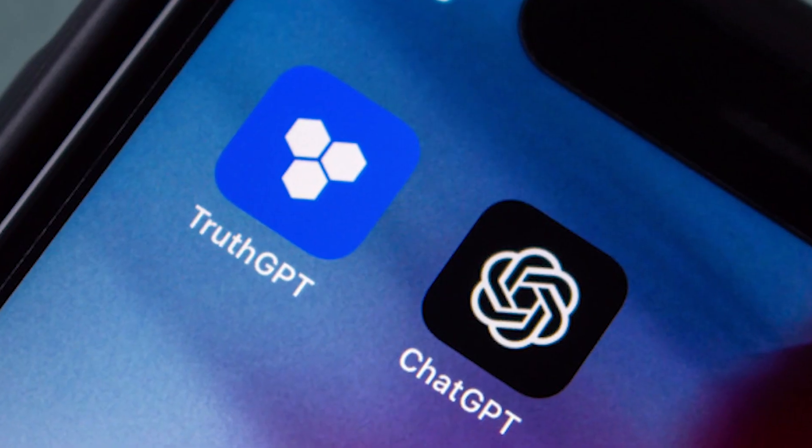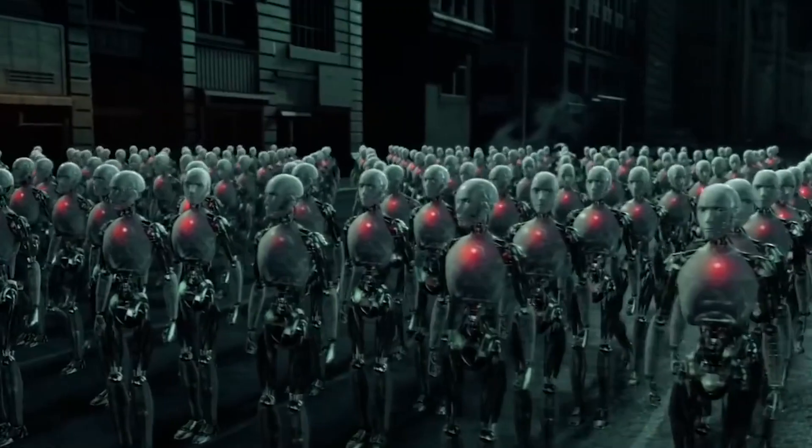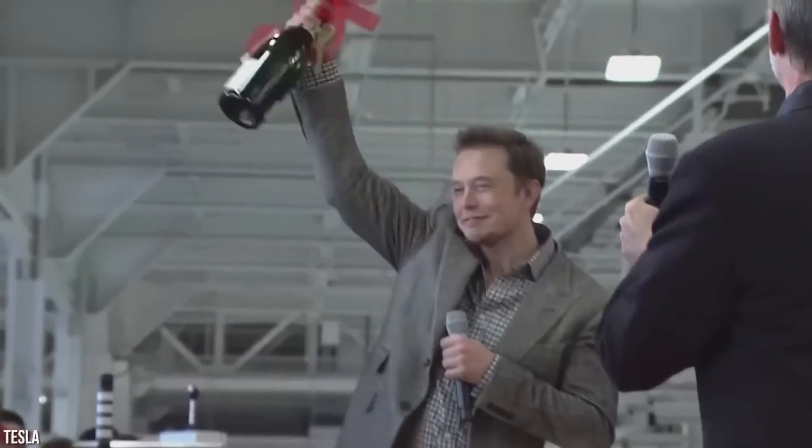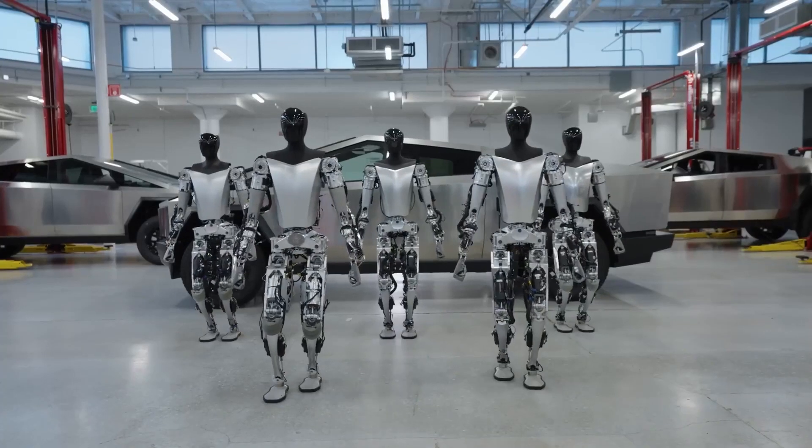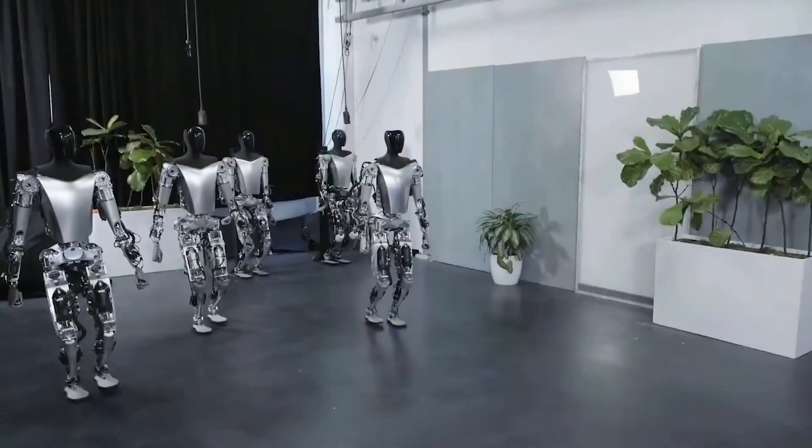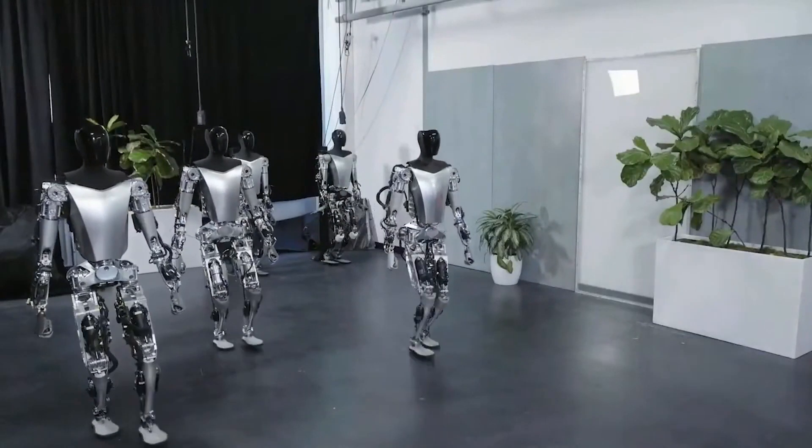But will TruthGPT be enough to counter the ill effects of evil AI? There's no direct answer to that. However, Elon Musk is creating a new army of bots dubbed the Tesla Optimus. These bots, according to Musk, will be trained to perform tasks we all hate to do.